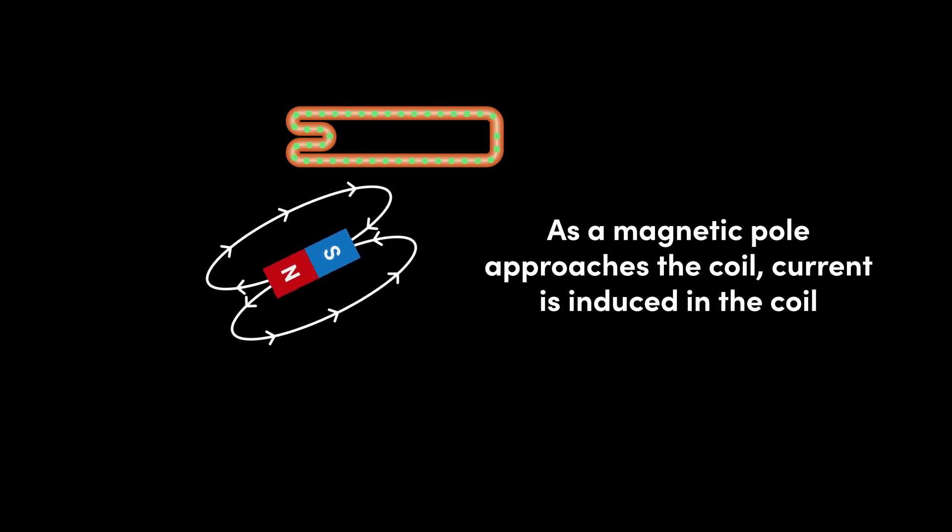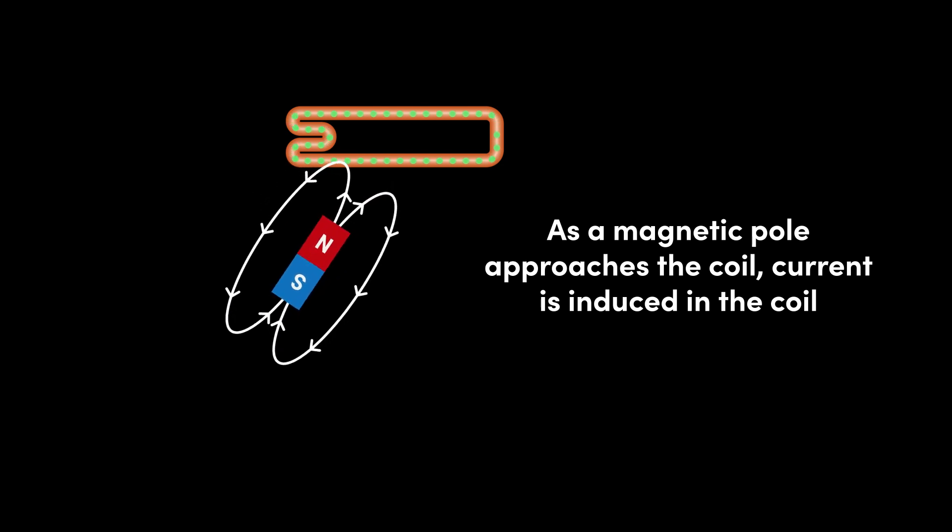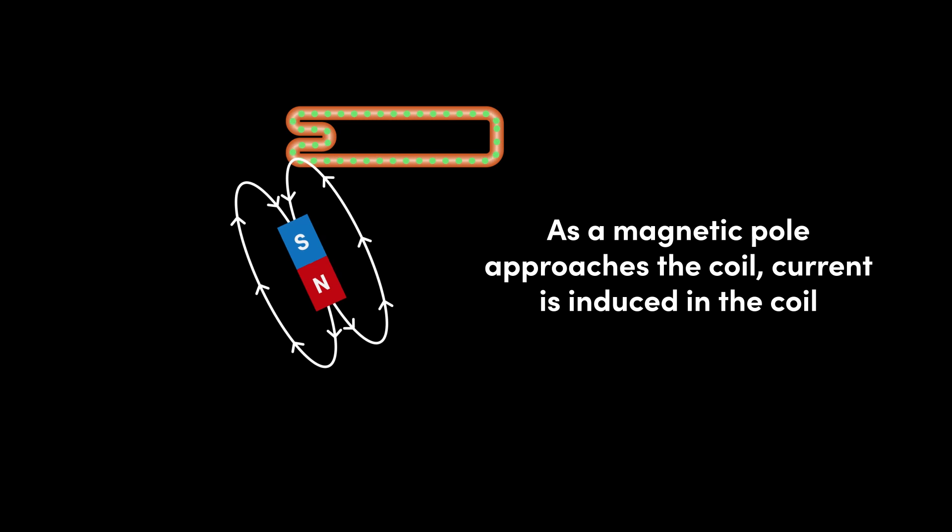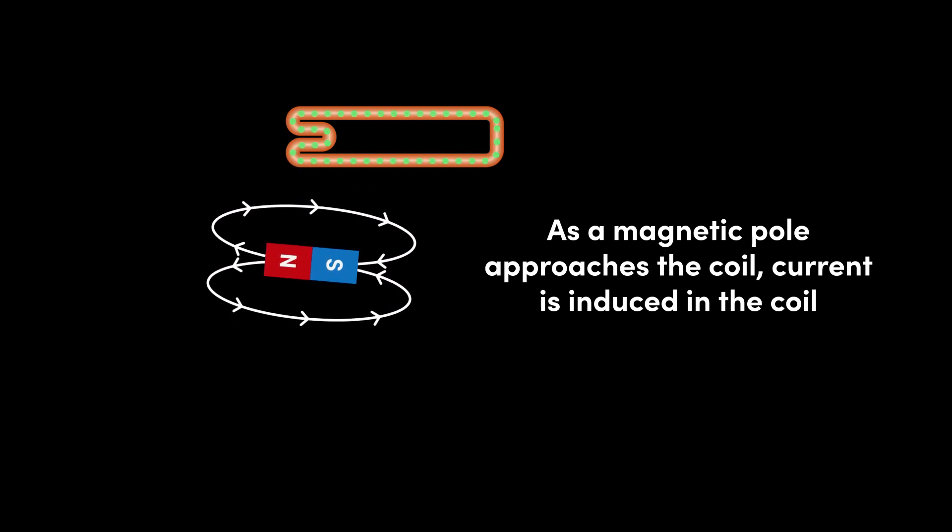As the magnet continues to rotate and the north pole leaves the coil, the decreasing strength of the magnetic field decreases the strength of the current, eventually back to zero as the center of the magnet faces the coil.